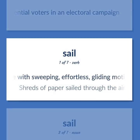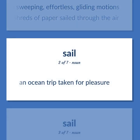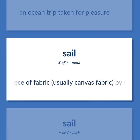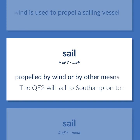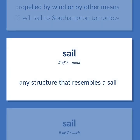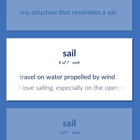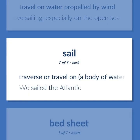Sail. Move with sweeping, effortless, gliding motions — shreds of paper sailed through the air. An ocean trip taken for pleasure. A large piece of fabric, usually canvas fabric, by means of which wind is used to propel a sailing vessel. Travel on water propelled by wind or by other means — the QE-2 will sail to Southampton tomorrow. Any structure that resembles a sail. I love sailing, especially on the open sea. Traverse or travel on a body of water — we sailed the Atlantic.